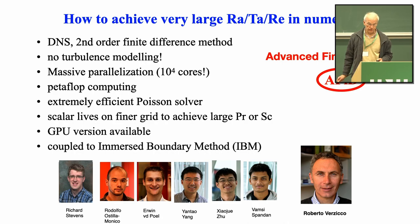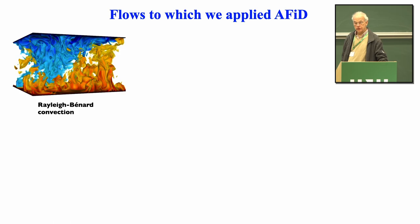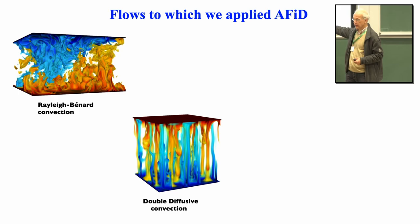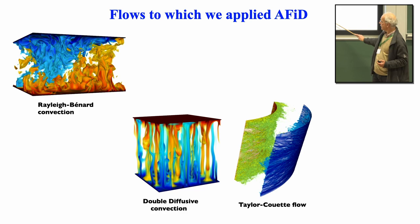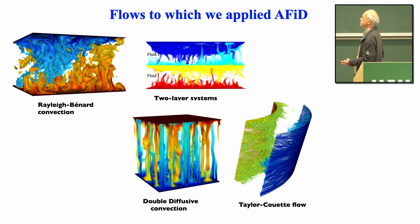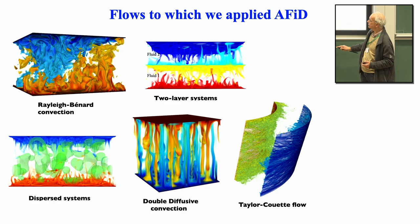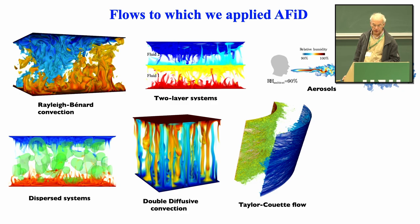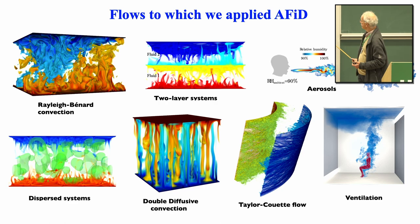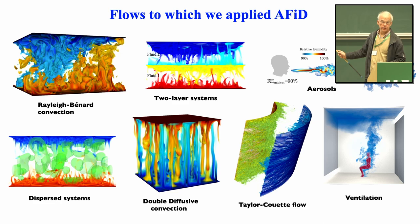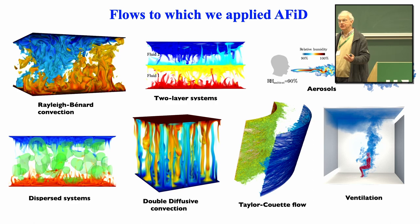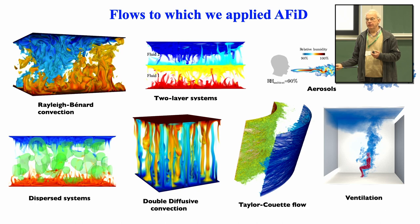We have applied this code to Rayleigh-Bénard, double diffusive convection — including fingering convection — Taylor-Couette flow, two-layer systems, dispersed multiphase flow with bubbles and drops, and during the corona crisis to aerosols and ventilation. We can do direct numerical simulations of a 3×3×3 meter room with a person sitting in it, though it takes about a month. The presently largest DNS has Rayleigh number 10 to the 13, and in November Physics Today published our paper on turbulent thermal convection, co-authored with Olga Shishkina.